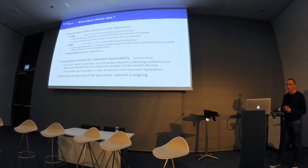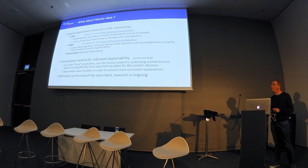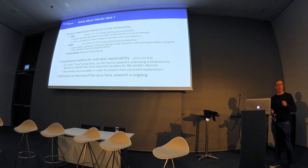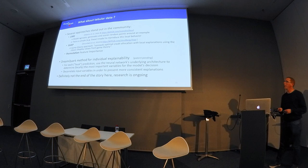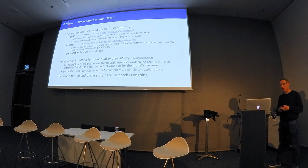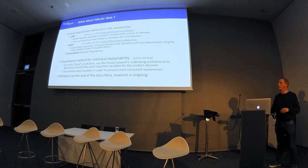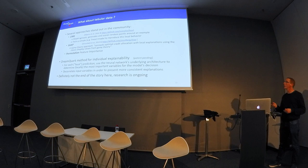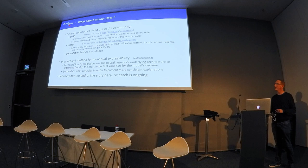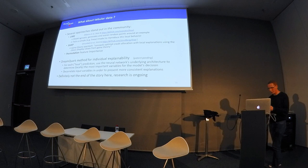A more complex approach is based on game theory and optimal credit allocation using Shapley values. There's also a permutation feature importance method where for each input variable you try all possible values and see how this impacts results. What we've been working on at DreamQuark is a method that is not model-agnostic but based on what the model actually is — using gradients within the network for a rigorous approximation of the decision, and decorrelating input variables so we present something corresponding to real-world data rather than random samples.